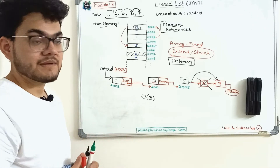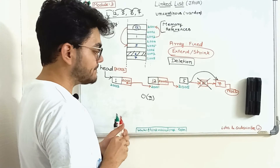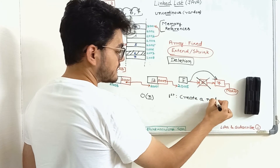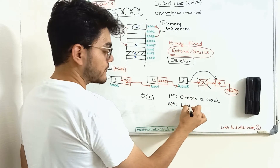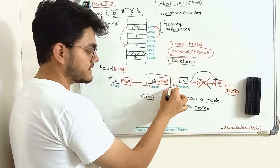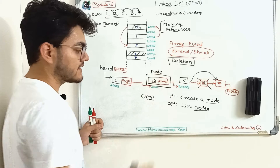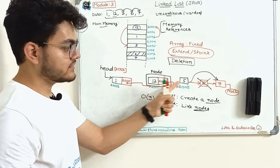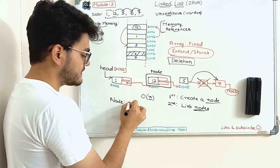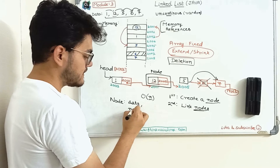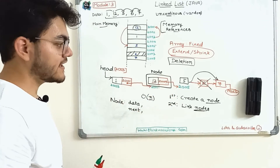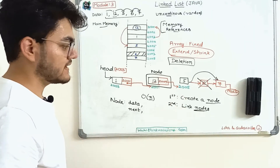Now the question is how we can implement this in Java. We need two important steps. The first step is to create a node, and the second step is to link all the nodes. A node is basically a data unit — this whole box represents a node. A node will have two things: the data itself, and a reference to the next data, which we call 'next'. This is the basic idea of linked list.